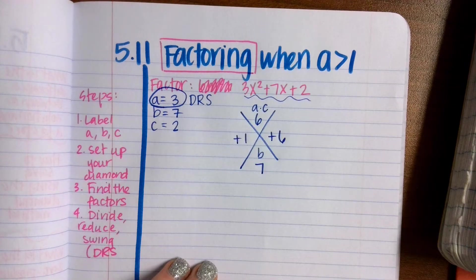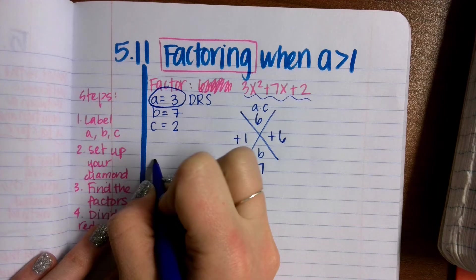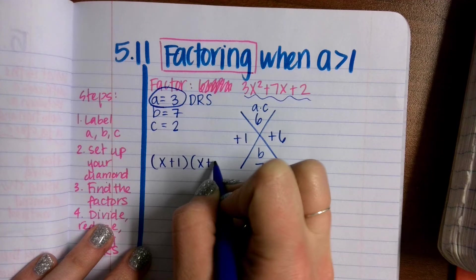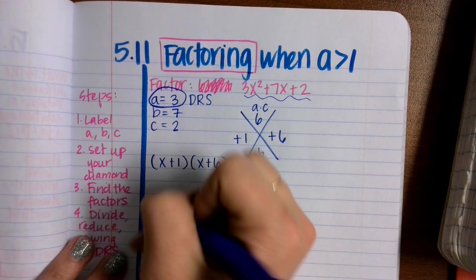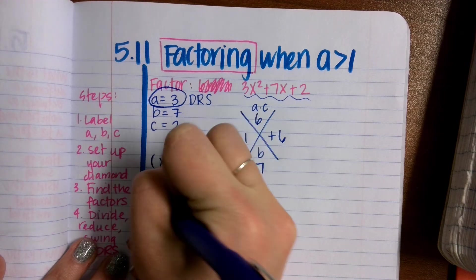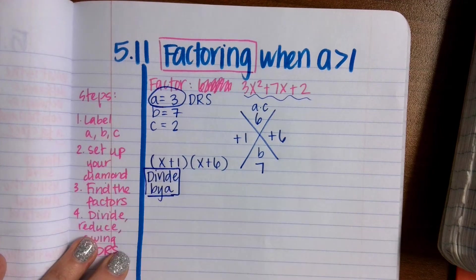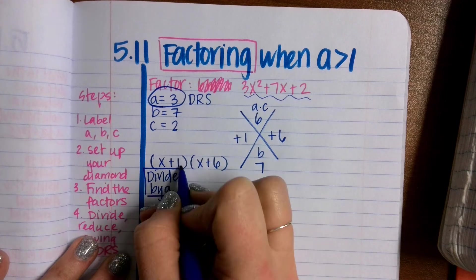Now we'll write our factors out. x plus 1, x plus 6. These are not our answers. The D stands for divide by A. Now we need to divide our back term by A. My A is 3, so I'm going to divide 1 by 3 and divide 6 by 3.